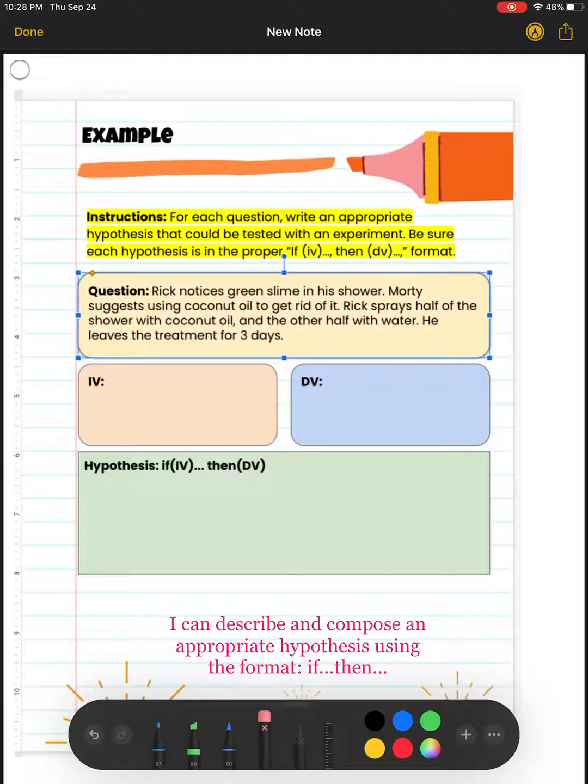A hypothesis is a prediction to a natural phenomena or to an observed phenomena. And a hypothesis has to be two things: it has to be specific and it has to be testable, meaning that it must be backed by evidence.